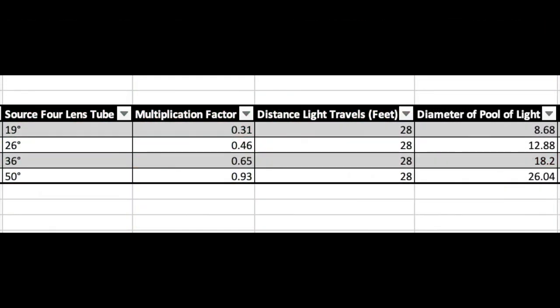I did the math for us: a 19° Source 4 gives a pool slightly larger than 8 feet, but I prefer to use a 26° Source 4 at this distance so that the slightly larger pool — around 12 feet — helps with the overlapping of areas for a smooth transition.